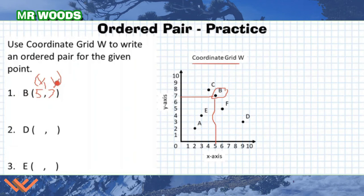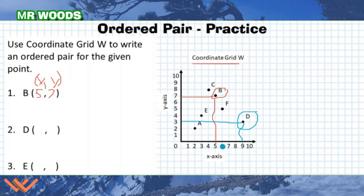Let's take a look at point D. I like drawing that line down to the axis so we have a better idea of where we're at. Let's count the x-axis first: 1, 2, 3, 4, 5, 6, 7, 8, 9. X comes first — that's 9. Then 1, 2, 3 on the y or vertical axis. So point D is at (9, 3).